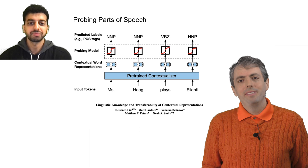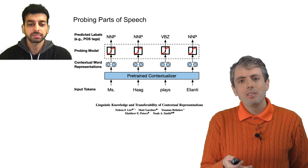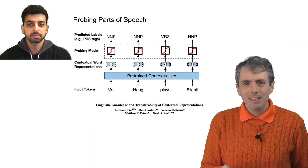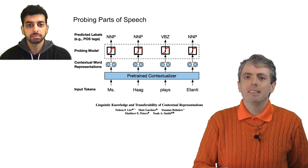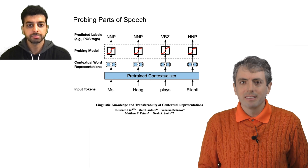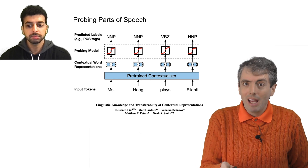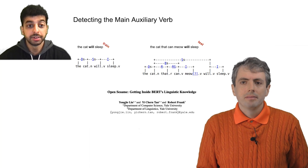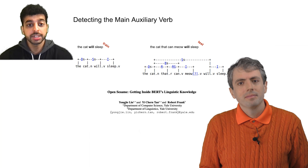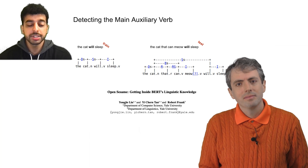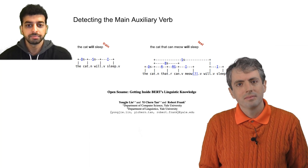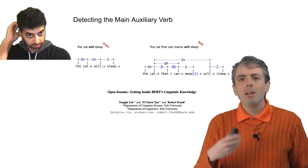But that's a word-level feature. Even if it's doing better than Word2Vec, you could probably do pretty well with non-contextual embeddings. Does BERT know anything about phrases? Yes, it seems to. Lynn et al. showed that it can also figure out which of the verbs are the main auxiliary verb.